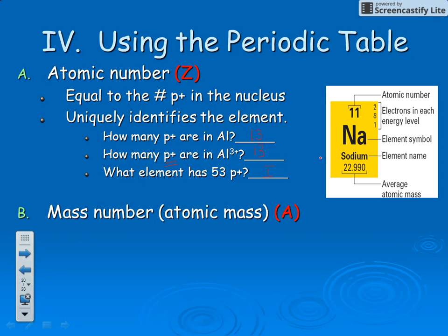There's another number called the mass number. This is the average atomic mass from the periodic table. The atomic mass number is typically rounded to the nearest whole number, so we'd round this one to twenty-three.